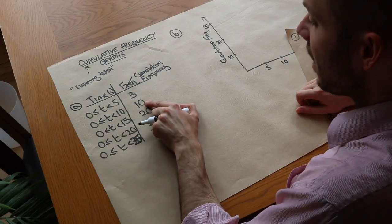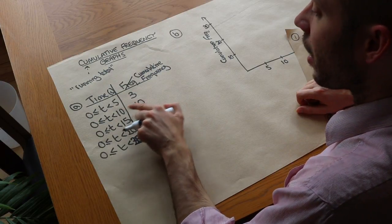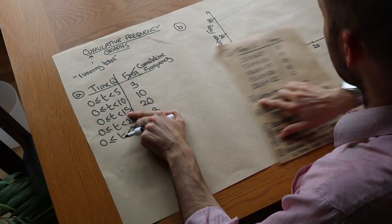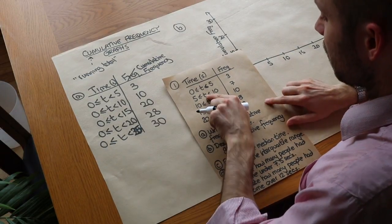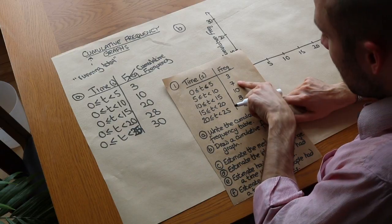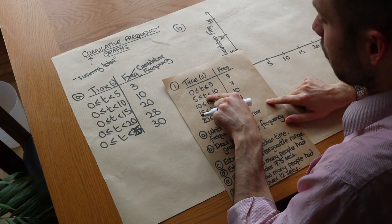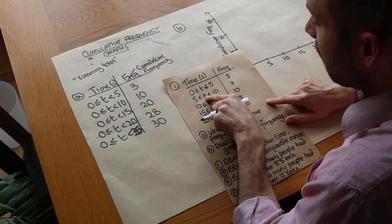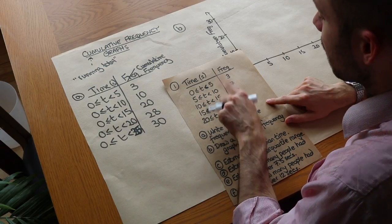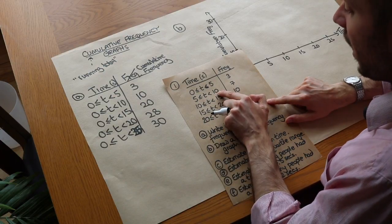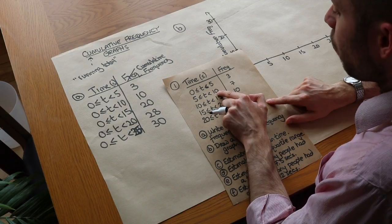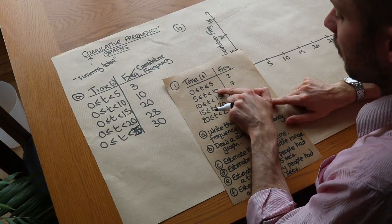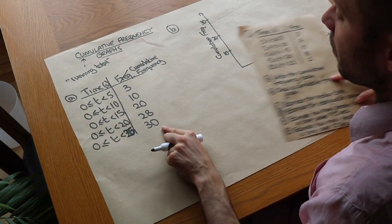In the second row we know there are ten people with a time of up to ten seconds, and in the next row twenty people with a time of up to fifteen seconds. It doesn't make sense to use the midpoint of 7.5 seconds, because we can't say ten people have a time of up to 7.5 — some of those people might have had times between 7.5 and ten seconds. But we know by the time we get to the end of the interval, by ten seconds, we would have seen ten people.